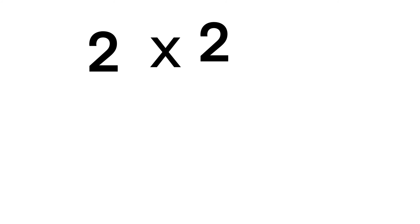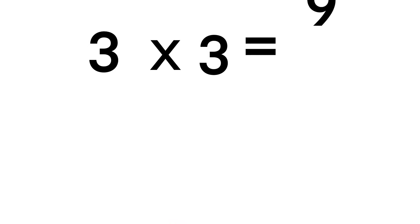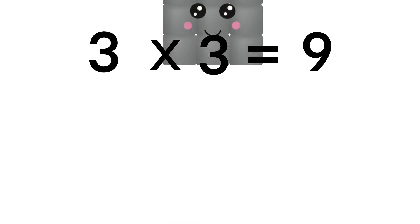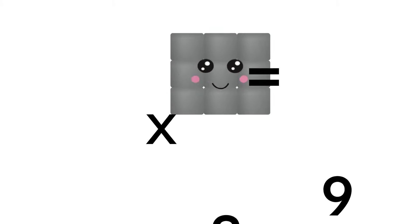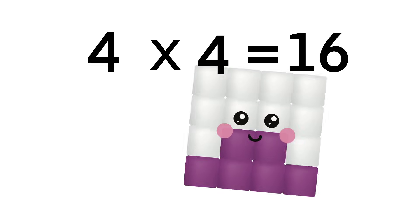2 times 2 equals 4, now let's find out a little more. 3 times 3 equals 9, the more we try, the more we'll find. 4 times 4 equals 16, square numbers are so easy.